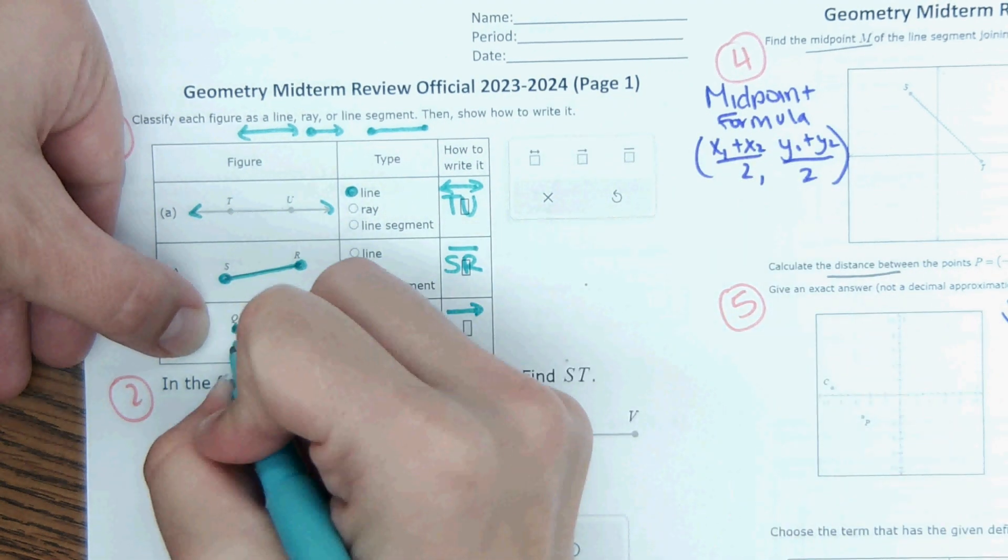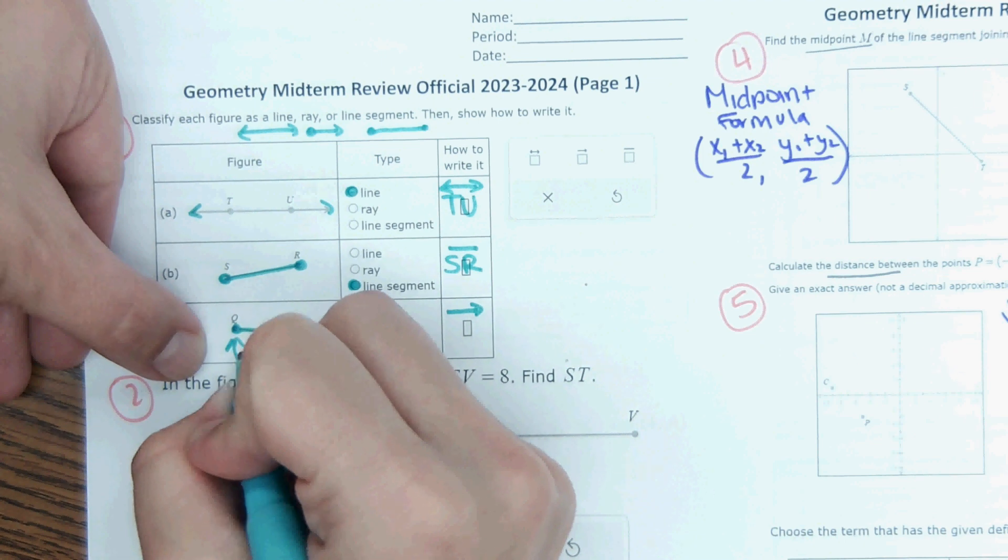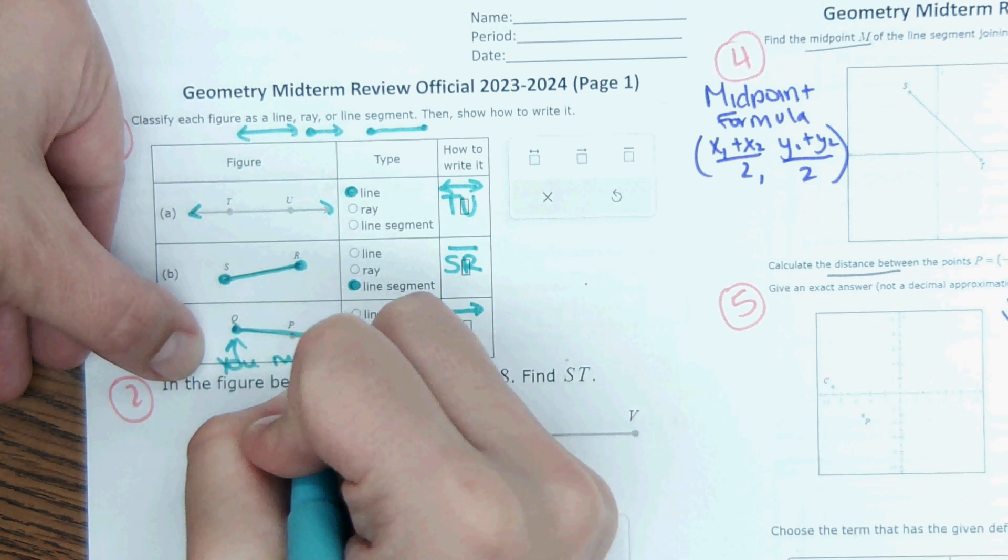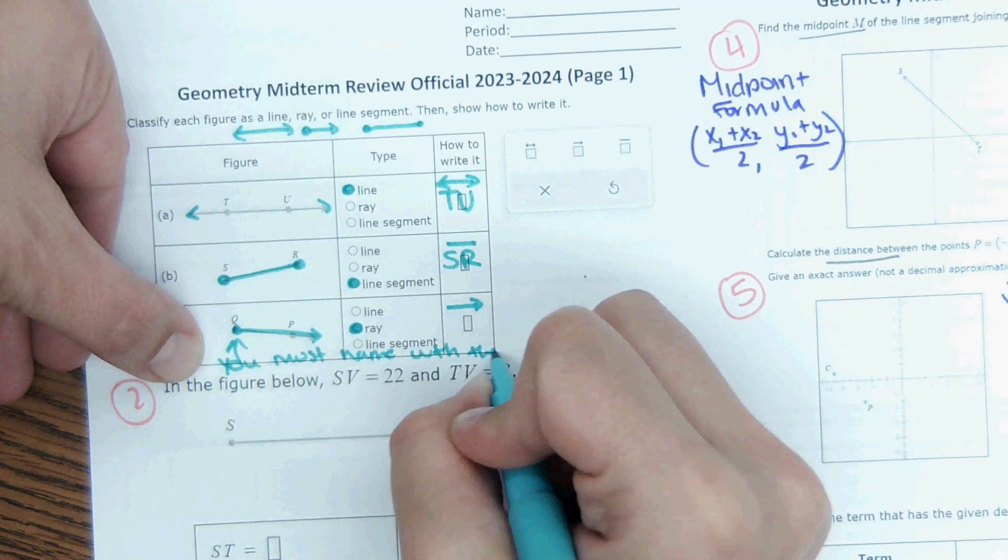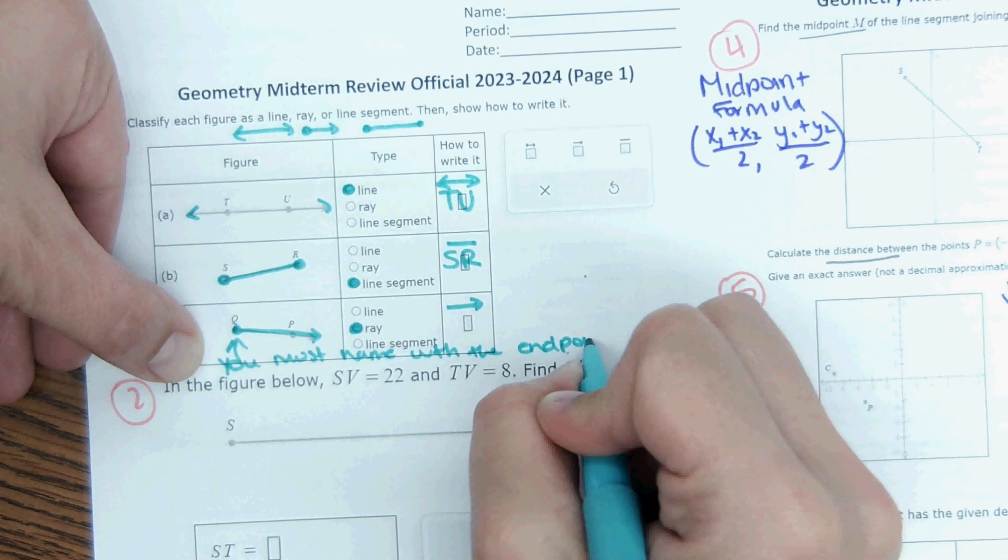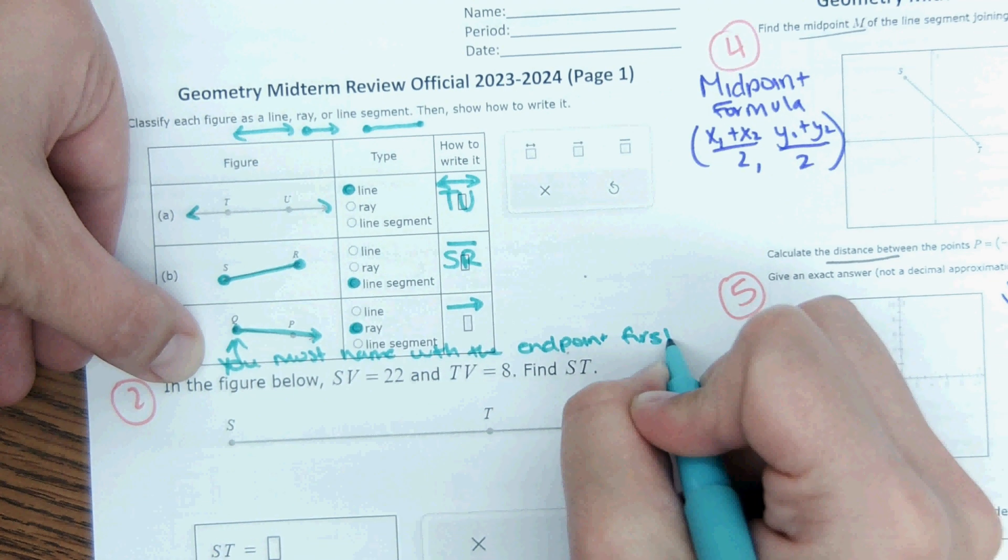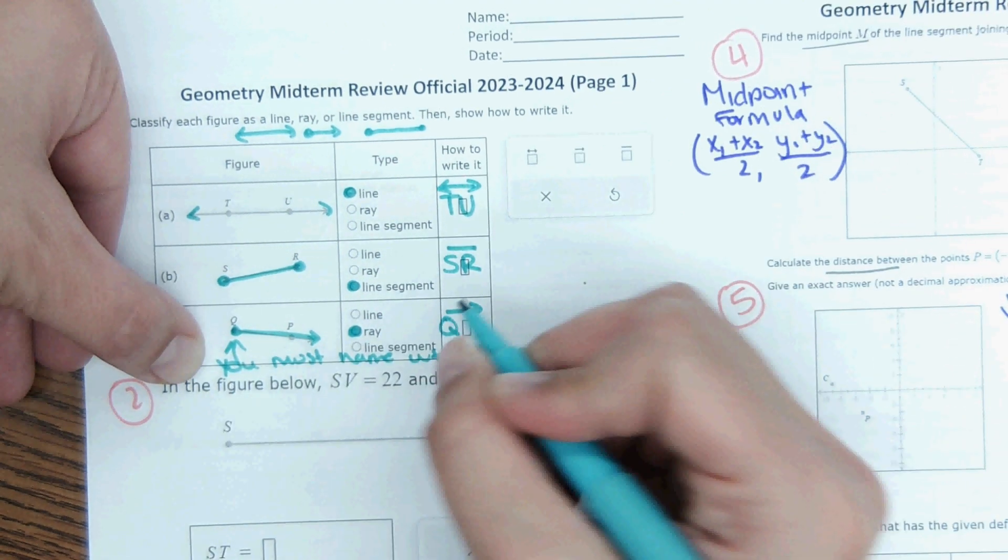When you name a ray, the most common question, you must start with this endpoint. You must name with the endpoint first. So Q is the first letter you'd use and then P.